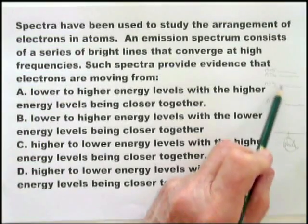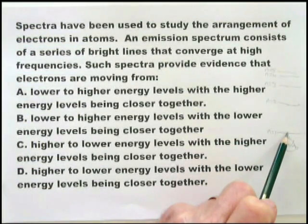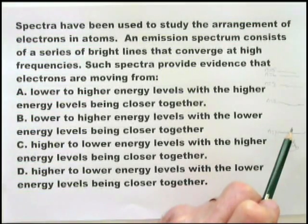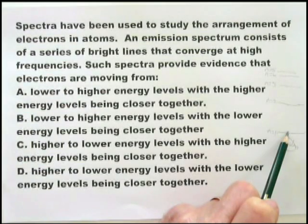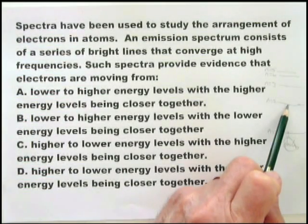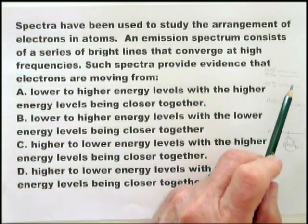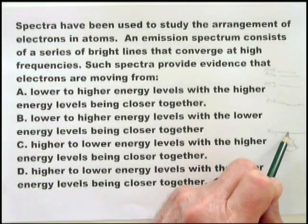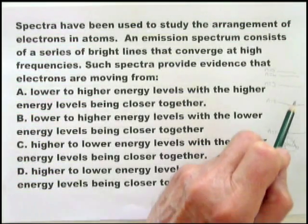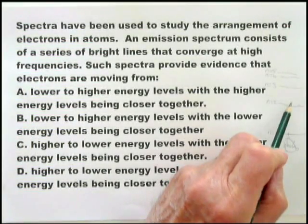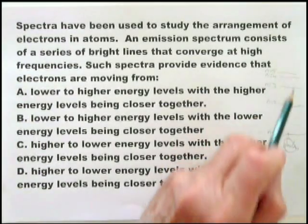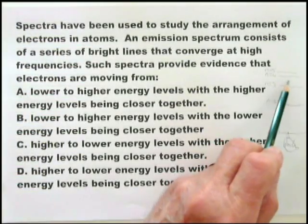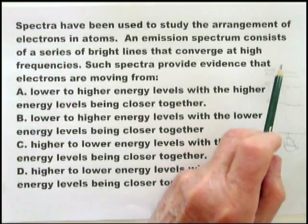Those three groups of emissions do have names, though whether you're expected to remember the names is another matter. Remember: falling to N=1 is ultraviolet; falling to N=2 is visible; falling to N=3 is infrared. There's more energy involved falling to N=1 than to N=2, and more than falling to N=3. The higher levels are less important except that you need to know there's less energy and they converge.